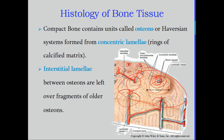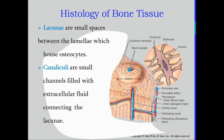The interstitial lamellae between osteons are leftover fragments of older osteons. Think of stacking firewood — there are spaces between round logs. Since osteons are round, older osteons fill in those gaps between them, just like filling spaces between stacked logs. The interstitial lamellae fill the gap between those round osteons.